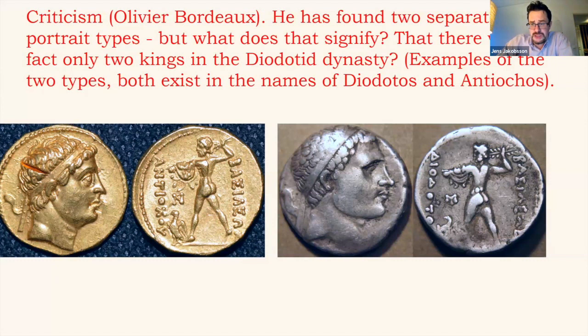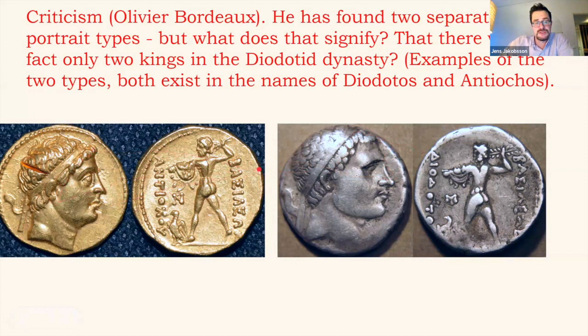What Bopearachchi found — and I think it's a very good example of numismatic research — was that there were two portrait types in the Diodatid dynasty. Both these types were issued in the name of Antiochus and Diodotus. You can see how different they are when it comes to hair — it's simply two different designs. As far as I understand, Olivier Baudot's interpretation is that two portrait types means there were two kings.